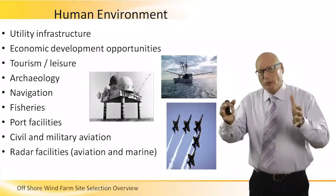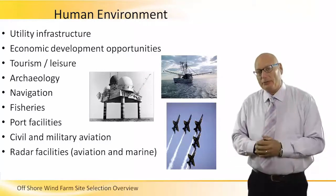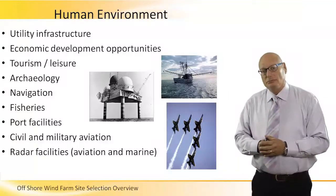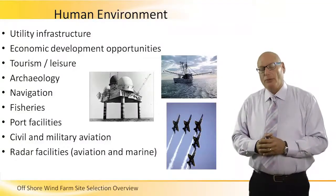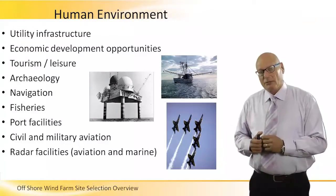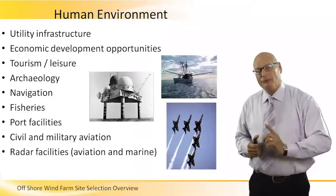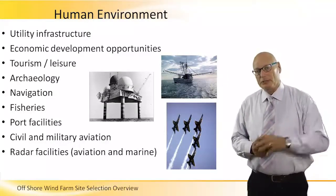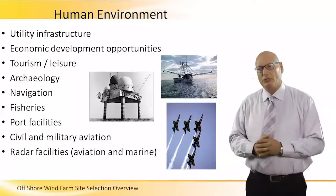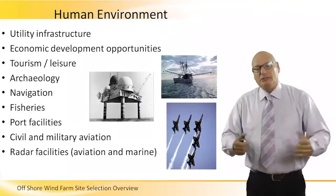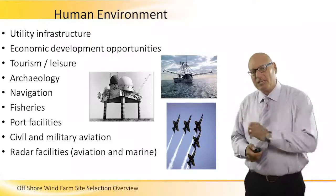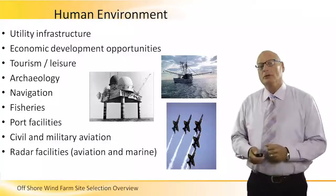Navigation of ships is a factor — we will select a site for a farm where ships do not typically move. Fishery, of course. Port facility: to install and maintain a farm requires a traffic of ships going back and forth, so we need a port facility nearby; otherwise the cost of maintenance and installation will go tremendously high. Obviously, civil and military aviation and radar facilities are all human environmental aspects that we need to take into consideration when we do site selection.